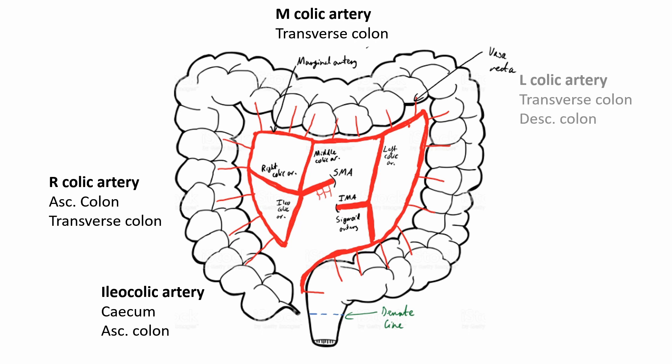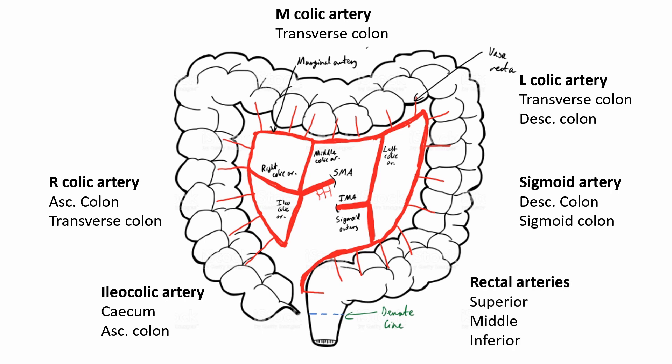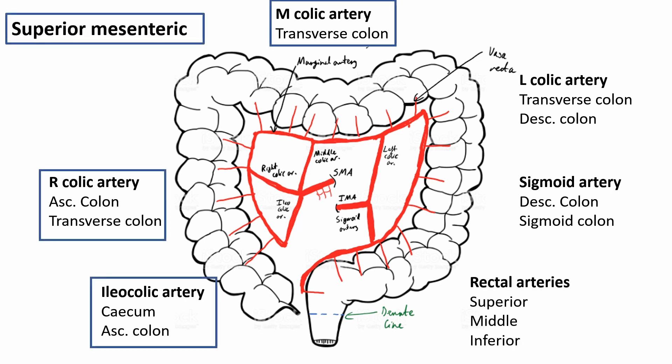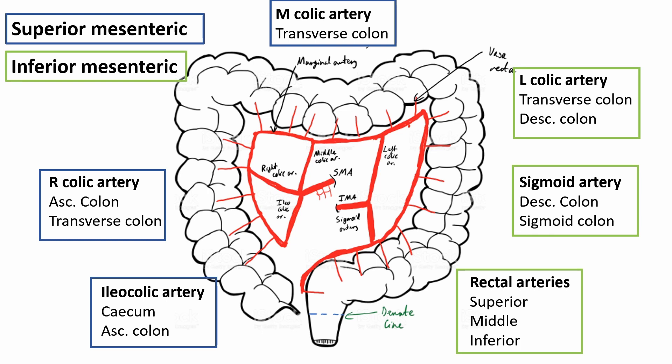On the left side, we have the left colic artery supplying the distal one-third of the transverse and descending colon, the sigmoid artery supplying the descending and sigmoid colon, and rectal arteries — the superior, middle, and inferior — which are branches of the IMA and internal iliac. We also have the marginal artery, which runs all the way around as an anastomosis of all these arteries, ensuring collateral supply for the bowel.